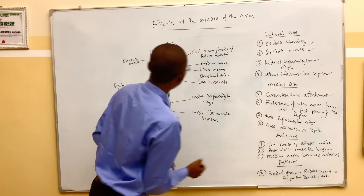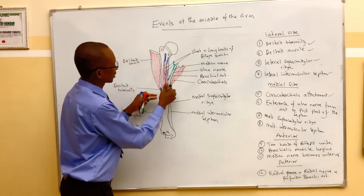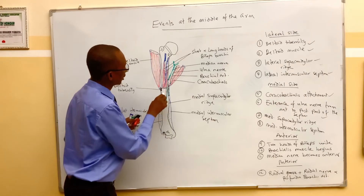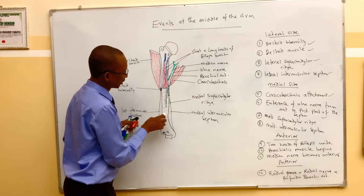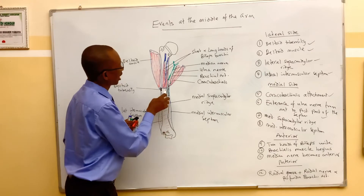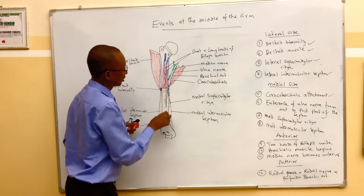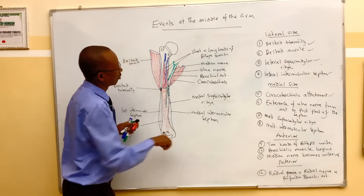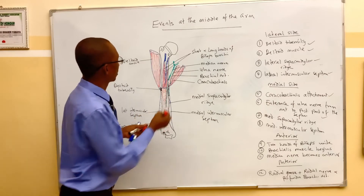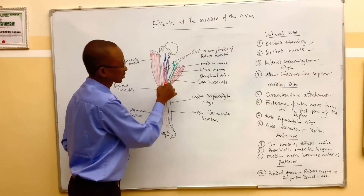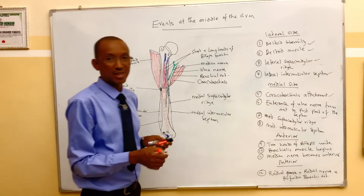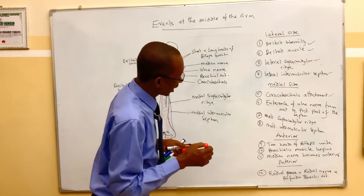The brachialis muscle is the muscle that lies on the anterior aspect of the lower half of the humerus. This muscle begins from the middle of the arm and then passes downward to get attached into the ulnar bone.